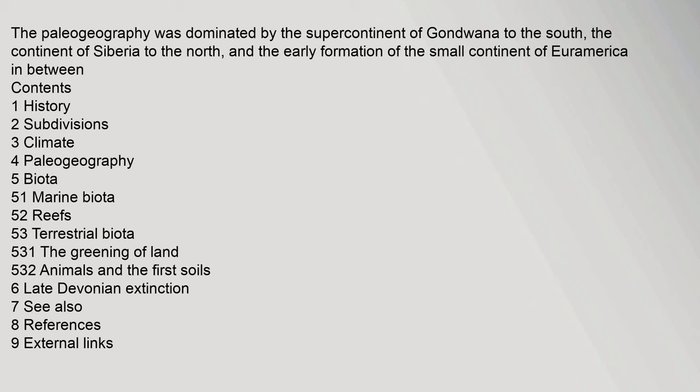The paleogeography was dominated by the supercontinent of Gondwana to the south, the continent of Siberia to the north, and the early formation of the small continent of Euromerica in between.